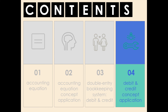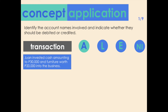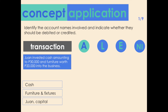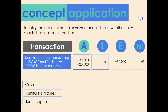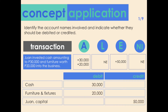Now we'll apply what we learned about debits and credits — the transactions are the same as before. Transaction one: Juan invested cash of 30,000 pesos and furniture worth 20,000 into the business. Accounts affected: cash, furniture and fixtures, and Juan capital. Assets increase due to the investments — 30,000 for cash and 20,000 for furniture. Equity also increases by 50,000. Cash and furniture and fixtures should be debited since these are increases in assets, while Juan capital should be credited since this is an increase in equity.